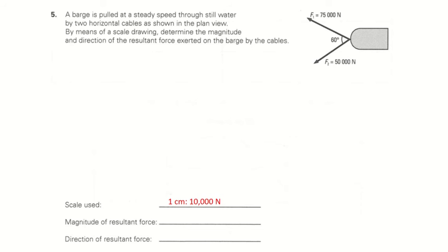Hey guys, I just want to make a quick video on using the parallelogram law to determine the resultant force. What we have here is a barge being pulled by two horizontal forces from the top view of 75,000 newtons and 50,000 newtons at an angle of 60 degrees.